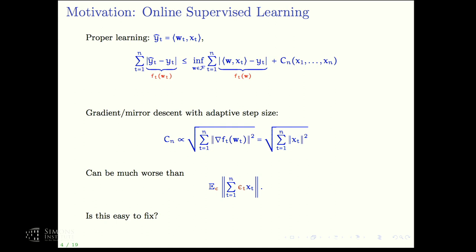Looking at the gap between what we want — the Rademacher averages — and the square root of the sum of the squares, there could be a huge gap. In the L2 case with a Euclidean norm, from the Khintchine inequality these are up to constant tight. But in different geometries, there could be a huge gap. In particular, for matrix completion with an appropriate trace norm constraint, this bound becomes meaningless — you're essentially paying a constant for every time step, whereas the spectral norm of a random matrix has much nicer behavior driven by the spread of the sampling.